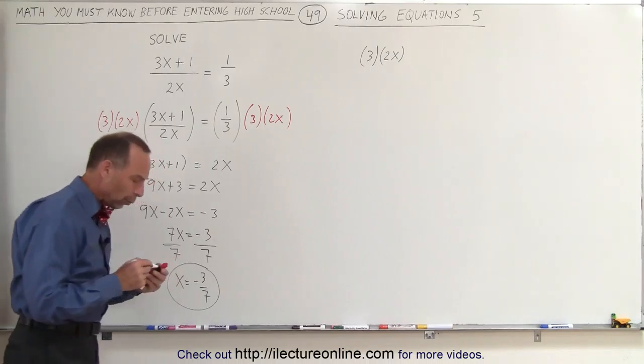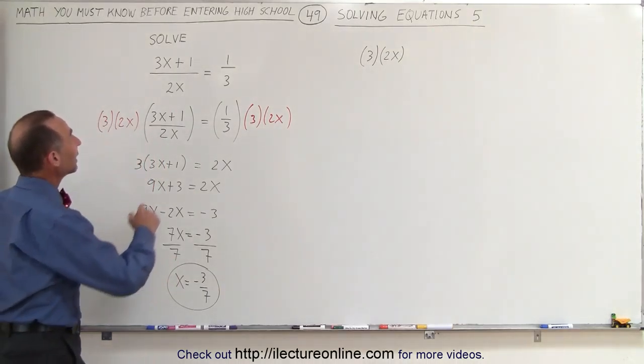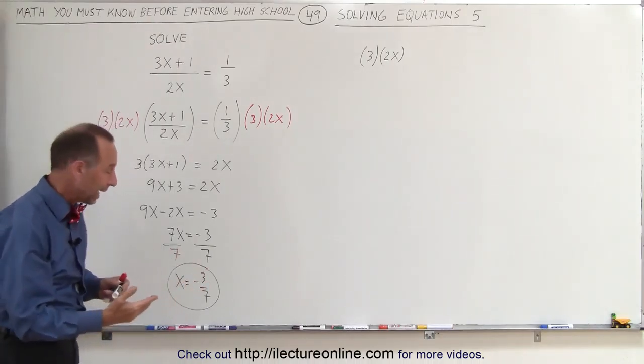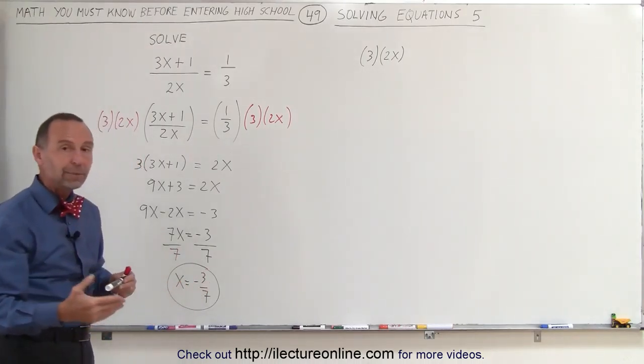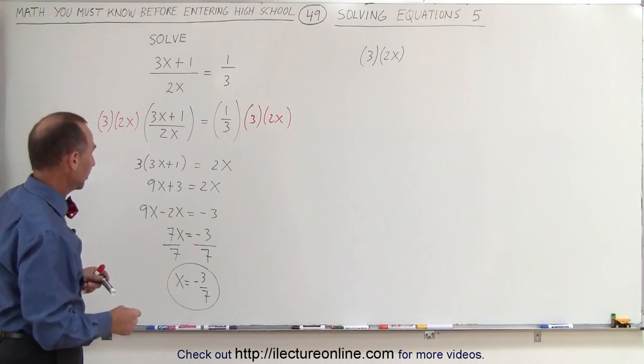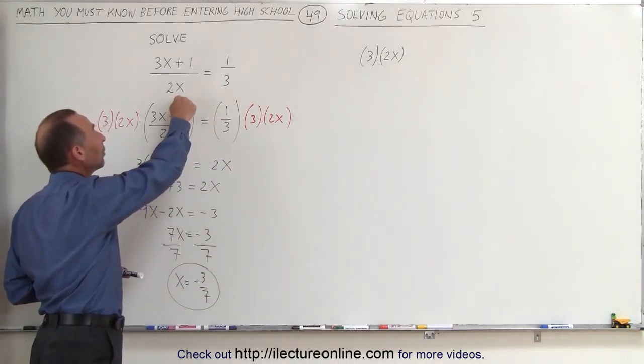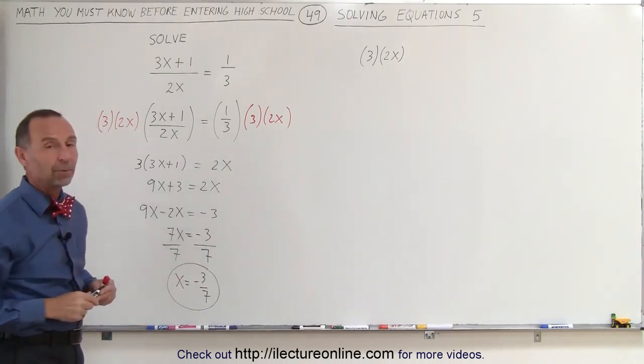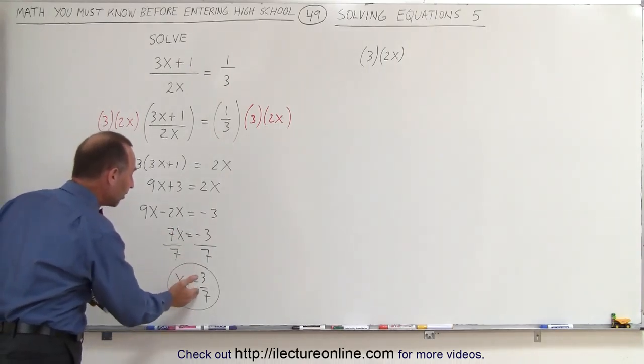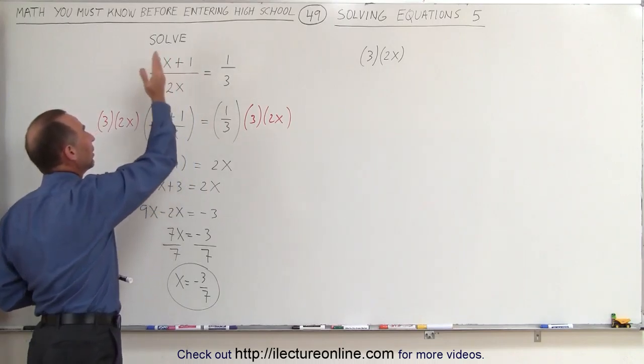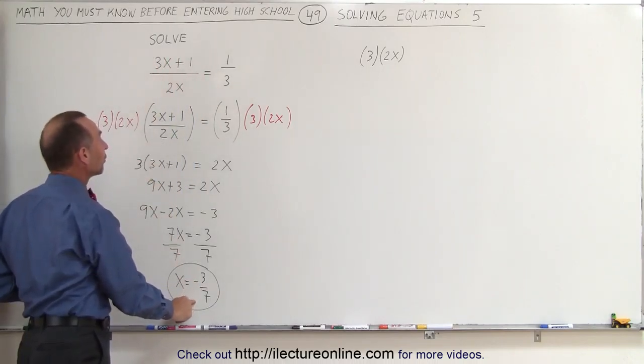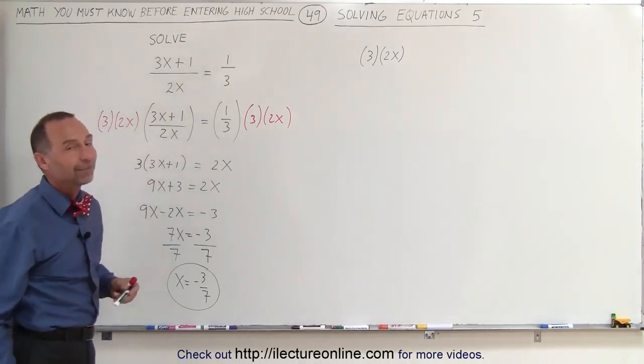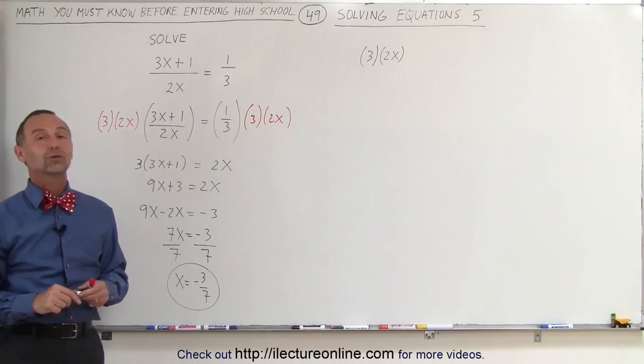Now we need to make one more check. Notice that we had an x in the denominator here. If, for some reason, we came up with the solution that x had to equal 0, that would be a non-acceptable solution. Because then when we plug it back in the original equation, we end up with a 0 in the denominator, which is undefined, and therefore that would not be a proper solution. But since it's not a 0, we can plug it in here, it's just fine. When we plug in x equals negative 3 over 7, on the left side, you can see that this would then equal the right side. And therefore, that makes this the correct solution.